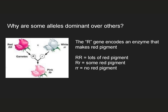In a case of incomplete dominance, you might have a situation where the R gene encodes an enzyme that makes red pigment. The big R, big R genotype means you're making lots of red pigment — you have two functional copies of that gene. The heterozygous individuals only have one functional copy; the little R allele does not make red pigment. So these heterozygous individuals can make some red pigment, but not as much as the big R, big R individuals. Therefore, they will look a lighter red or pink. And the little R, little R individuals have no functional copies of this enzyme, therefore they make no red pigment and appear white.